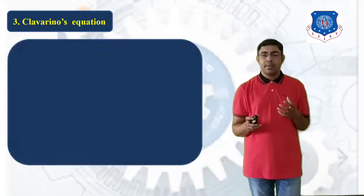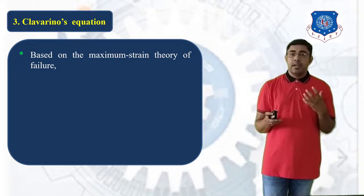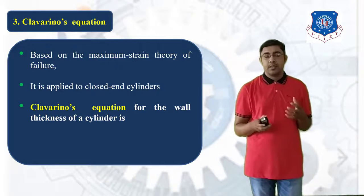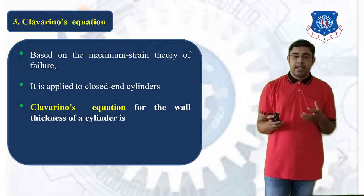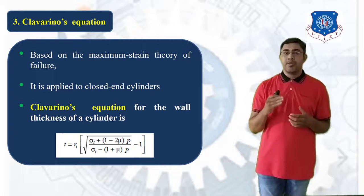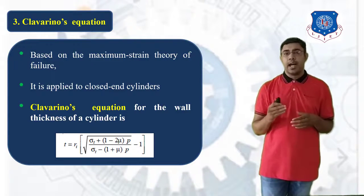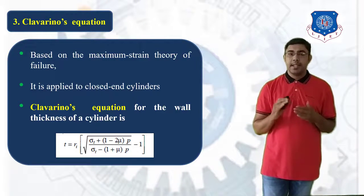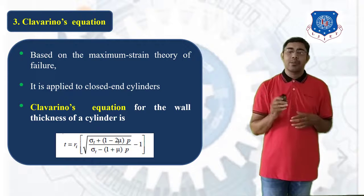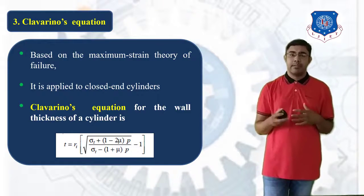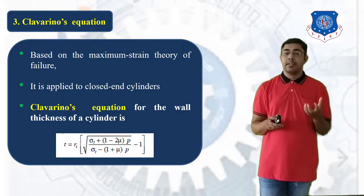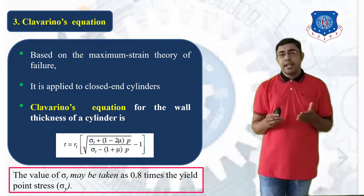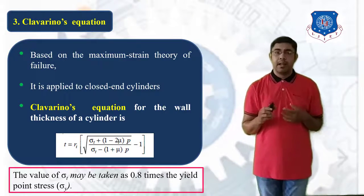Clavarino's equation is also based on the maximum strain theory of failure but is applied for closed-end cylinders. The wall thickness is: T = Ri × [√((sigma T + (1 − 2nu) × P) / (sigma T − (1 + nu) × P)) − 1]. Here sigma T is also taken as 0.8 times the yield stress sigma Y.